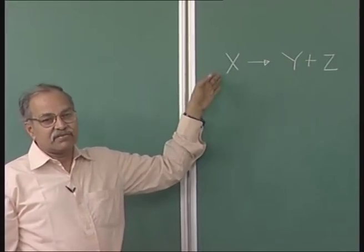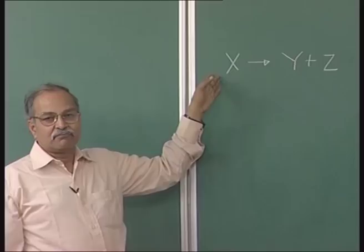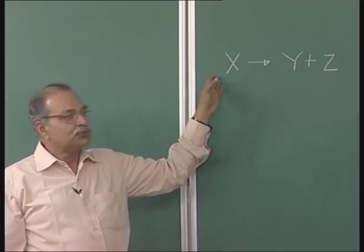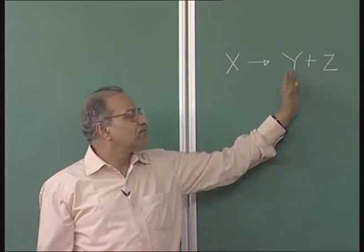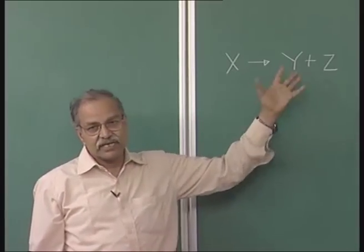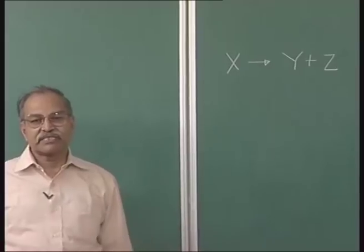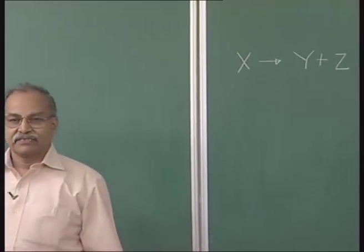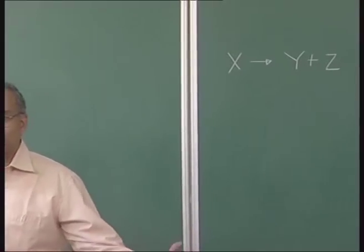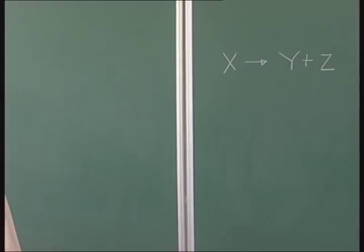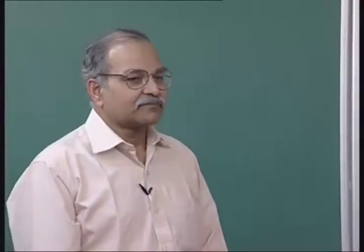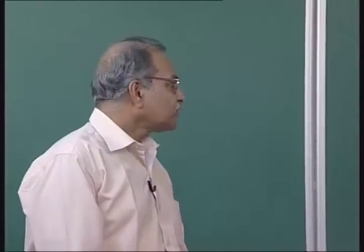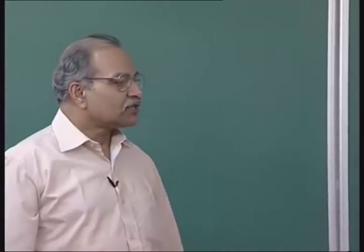Essentially, a heavy nucleus breaks into two middle-weight nuclei. This process is known as fission, or this nuclear reaction is known as a fission reaction.